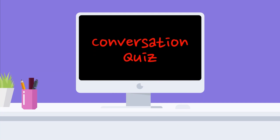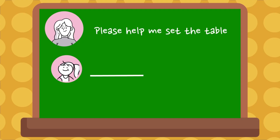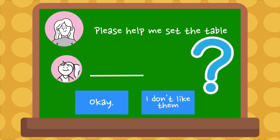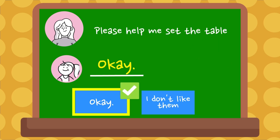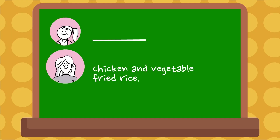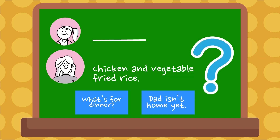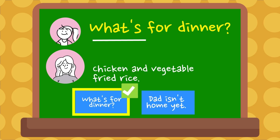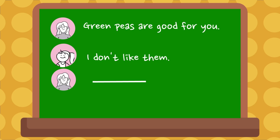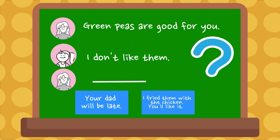Conversation quiz. What does Anne say? Please help me set the table. Okay. I don't like them. What does Anne say? What's for dinner? Dad isn't home yet. What does mom say? Green peas are good for you. I don't like them. Your dad will be late. I fried them with the chicken. You'll like it.